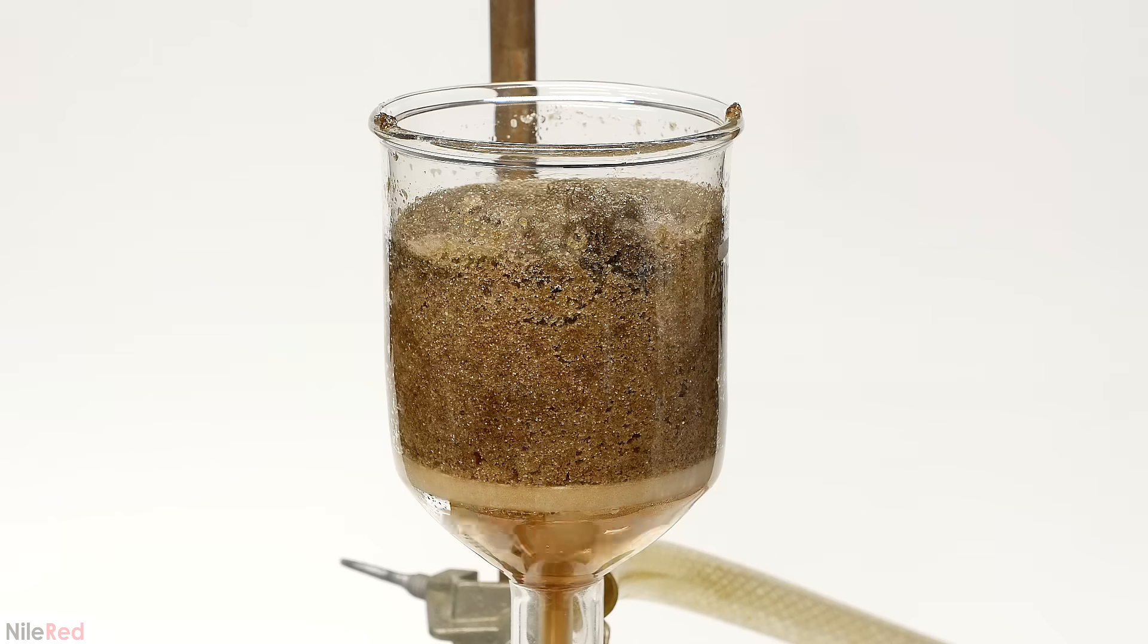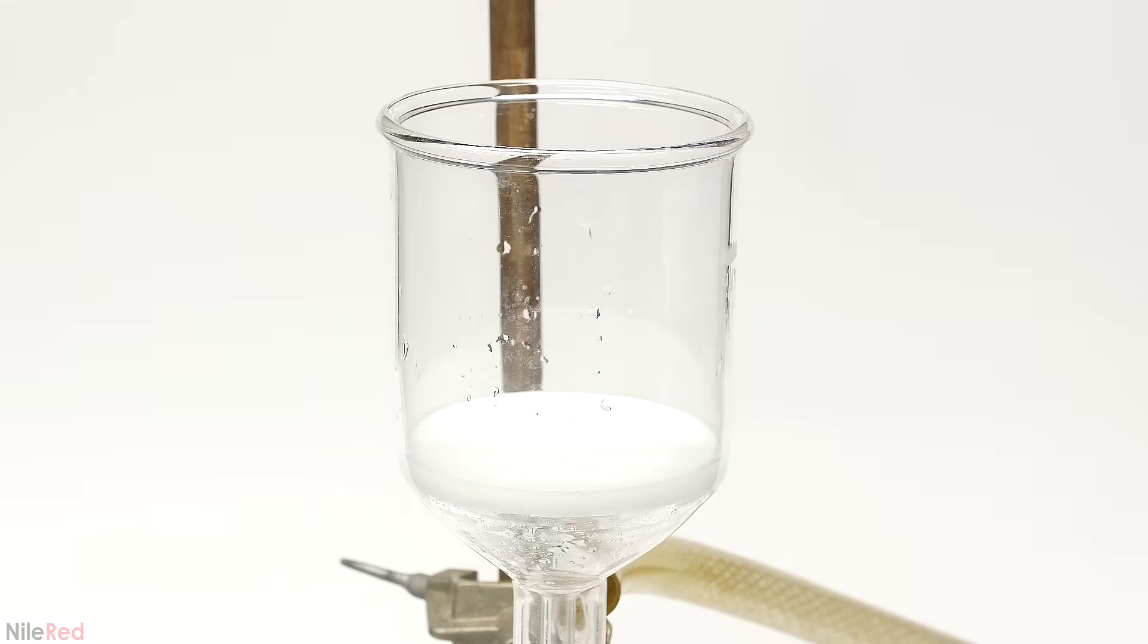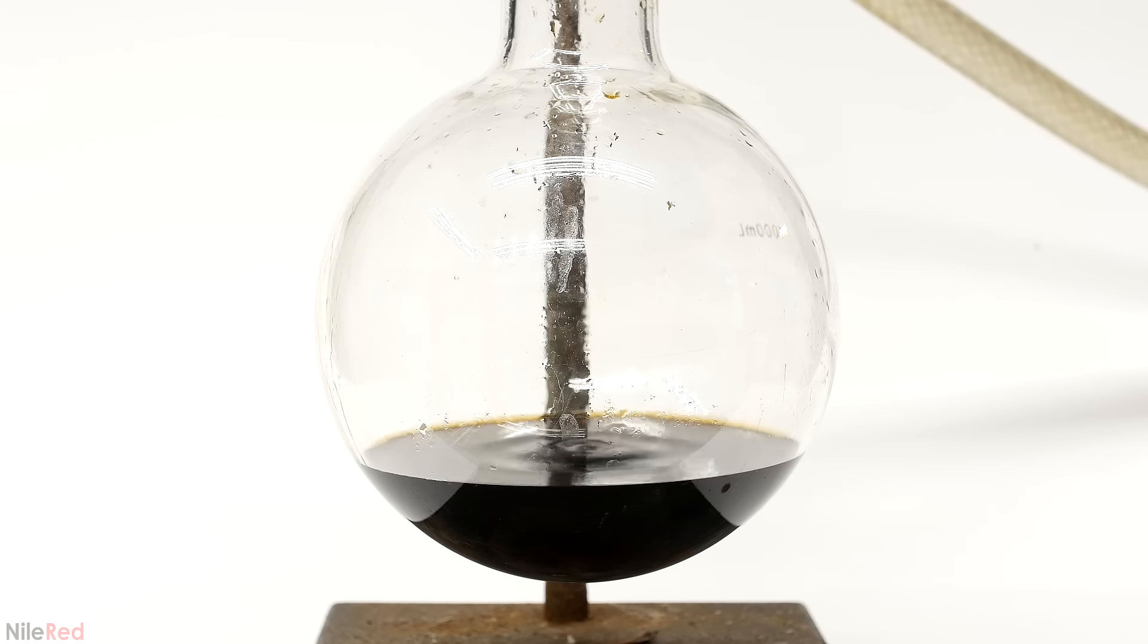I turn on my pump, and most of the dark concentrated pee is pulled out. It's all collected in the flask below, and thankfully, it can now be discarded. This is where all the stink is coming from, so from this point on, things are gonna be a lot more pleasant.